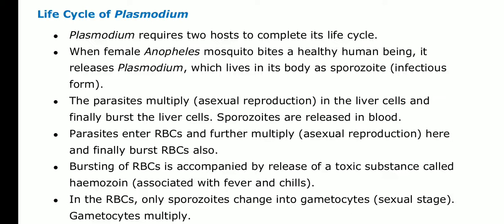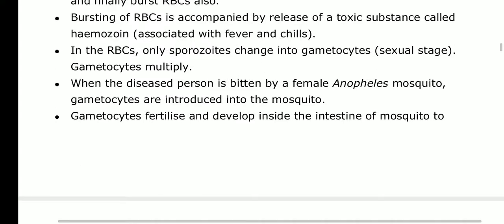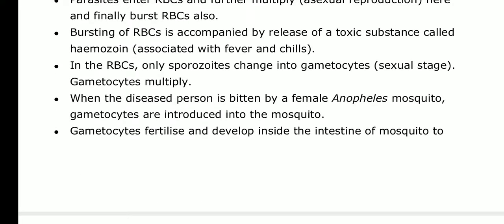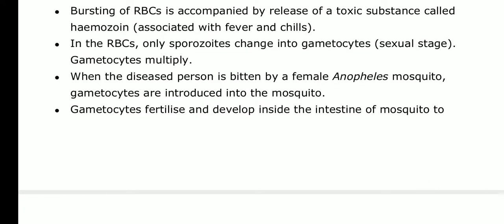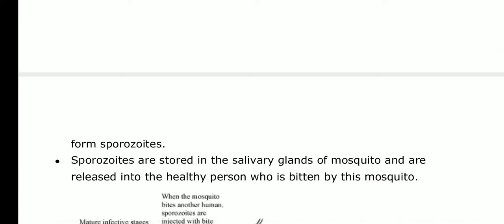Inside the RBCs, the parasite undergoes changes and transforms into gametocytes — these are actually the sexual forms. When a female Anopheles mosquito bites the diseased person, these gametocytes are introduced into the mosquito.